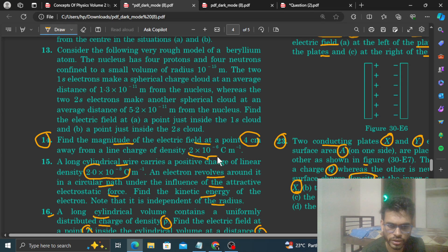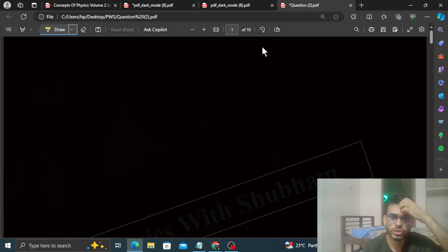...of density 2 × 10^-6 coulombs per meter. So what is given? We have a linear charge density. You can visualize a long wire, and this wire has a linear charge density lambda whose value is given as 2 × 10^-6 coulombs per meter.